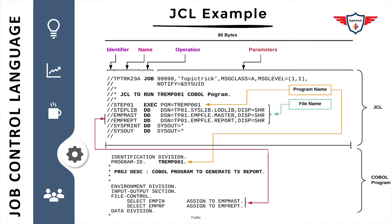Then you have EMP-MAST and EMP-REPT. EMP-MAST is an input file for the program, and EMP-REPT is the report output file. Then you have SYSPRINT and SYSOUT, so whatever display statements or messages are generated will be printed to spool. The last line of the JCL is two forward slashes, which is the identifier that marks the end of the JCL.